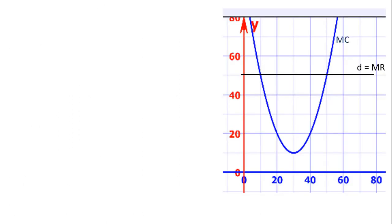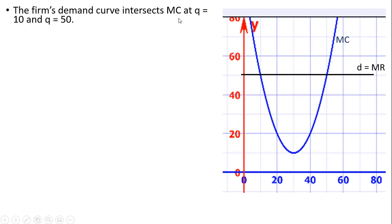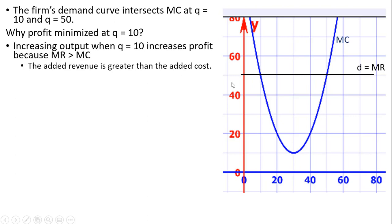Graphically, let me show you what's happening in this problem. This U-shaped curve is our marginal cost curve. The going market price is $50, which is a competitive firm's demand curve or marginal revenue curve. We found that where price equals marginal cost, it occurs at Q equals 10 and Q equals 50. At Q equals 10 profits are minimized, and at Q equals 50 profits are maximized. The firm's demand curve intersects marginal cost at two points. Increasing output when Q equals 10 increases profit because marginal revenue for, say, the 11th unit exceeds the marginal cost of the 11th unit — the height of the black marginal revenue line exceeds the height of the blue marginal cost line if we produce a little beyond 10 units. So the added revenue is greater than the added cost, and this increases profit.